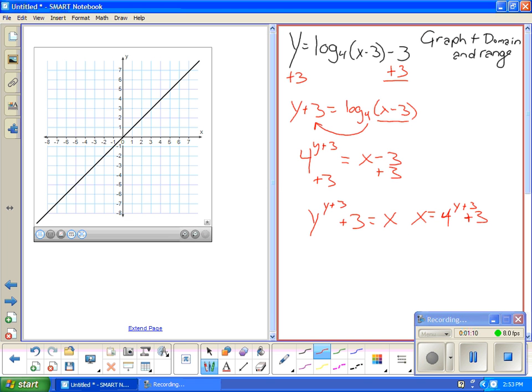But you can't graph that because it's the inverse. Then you just change y and x. So y equals 4 to the x plus 3, plus 3. So that is our equation.